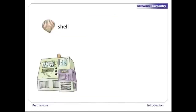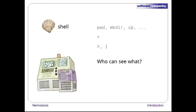In the previous episodes in this lecture, we looked at how to use a command shell to interact with a computer, and met a few commonly used commands such as pwd, mkdir, and cp. We also met the wildcard character star, and saw how to redirect output with > and create pipes with |. It's now time to look at how Unix determines who can see the contents of which files, and at how it controls who can change those files and run particular programs.